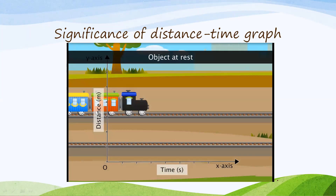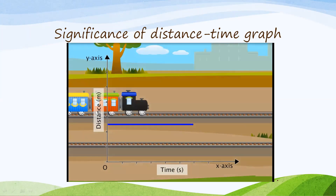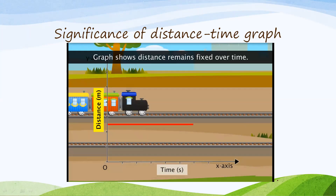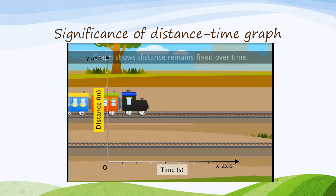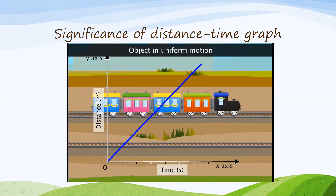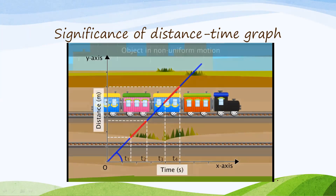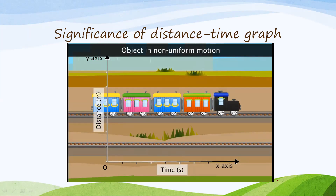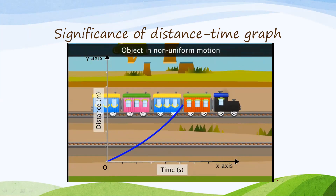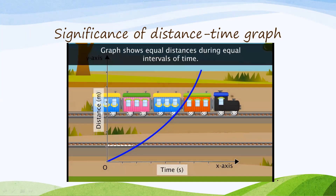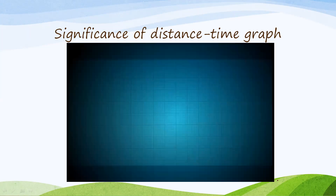First, let's look at the graphical representation of an object at rest. Object at rest means the shape of the graph will be parallel to the time axis, which means distance remains fixed over a long time interval. If the object is undergoing uniform motion, it will have a straight line making an angle with the time axis, meaning the object covers equal distances during equal intervals of time. Non-uniform motion is represented by a curved graph — in this case, distances in equal intervals of time are not equal, which means this graph represents a non-uniform motion.